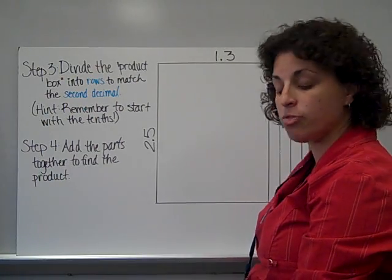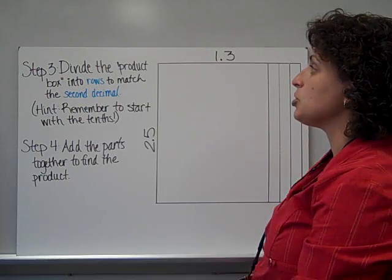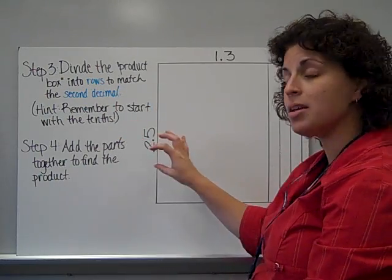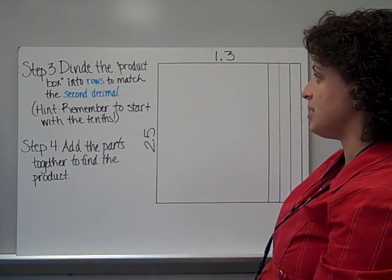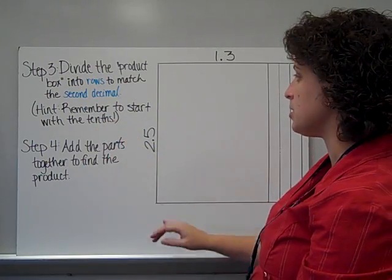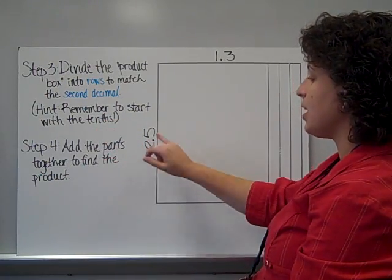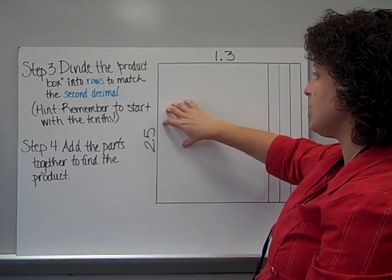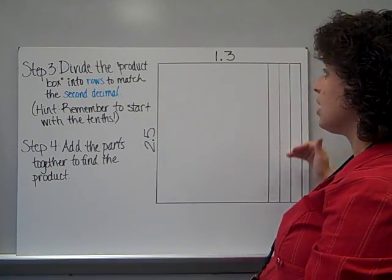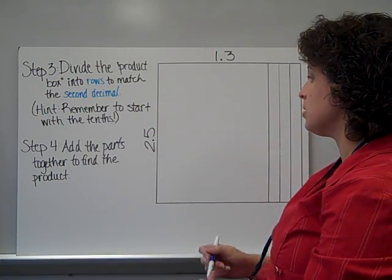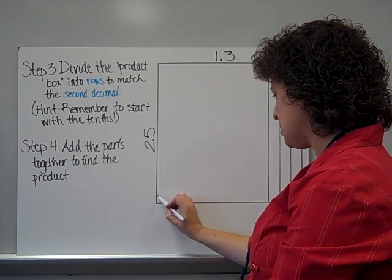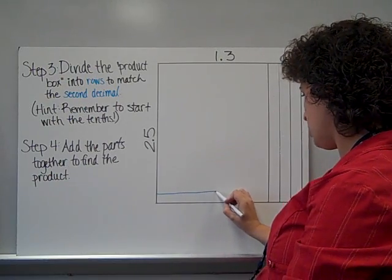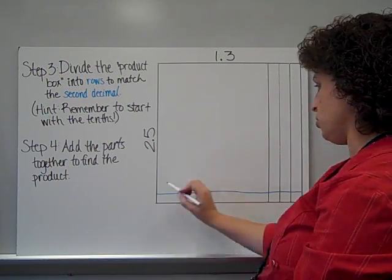Now, my model's not done, but I want you to see the second step clearly. So here is the first step, 1 and 3 tenths. The next step is to divide the product box into rows, rows go across, to match the second decimal. Remember to start with the tenths. So I've got 2 and 5 tenths, and I need to do rows, going across. I've already got my 1 and 3 tenths. Now I need my 2 and 5 tenths. So I need 5 tenths.